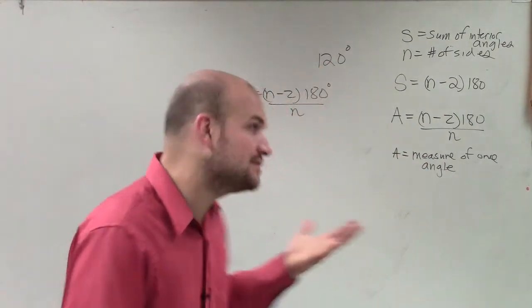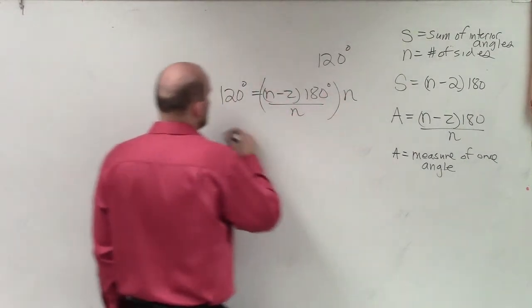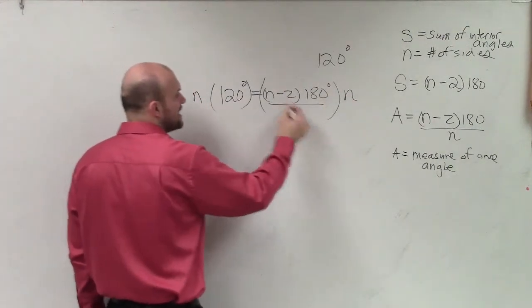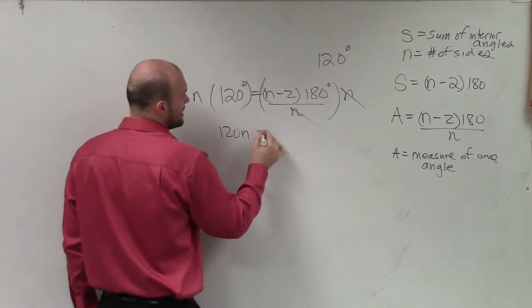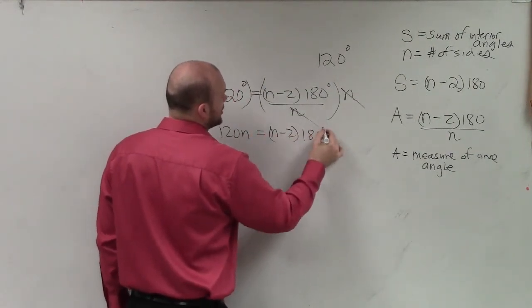So to do that, the first thing you guys need to do is get n off the bottom. So I'll do that by multiplying n on both sides. When doing that, when I multiply n on both sides, these n's divide to 1. And I'm left with 120n equals n minus 2 times 180 degrees.